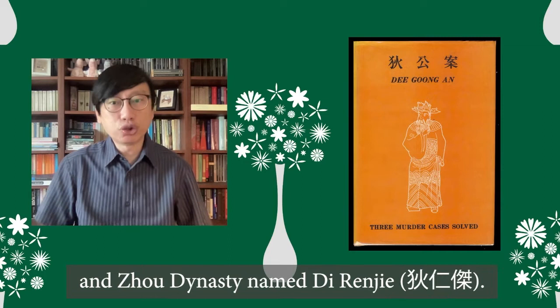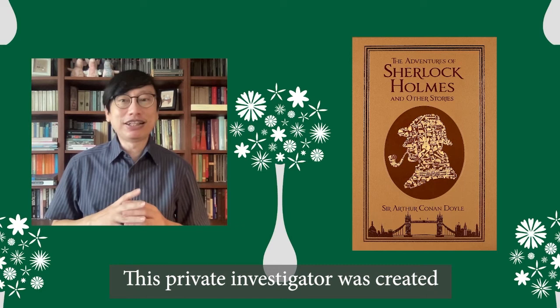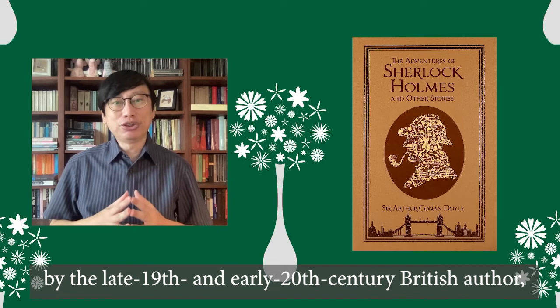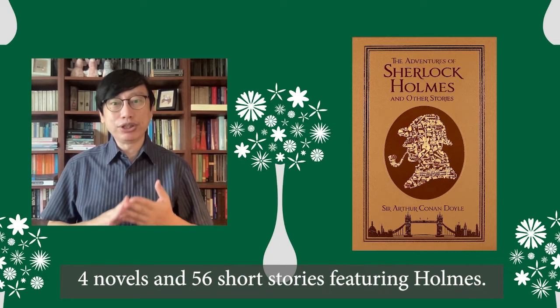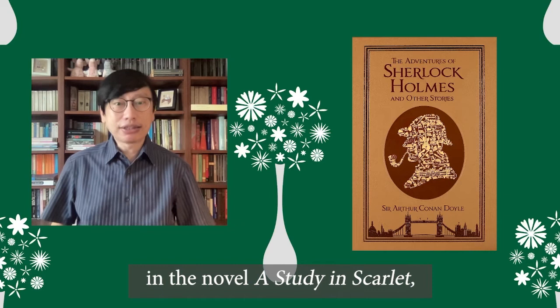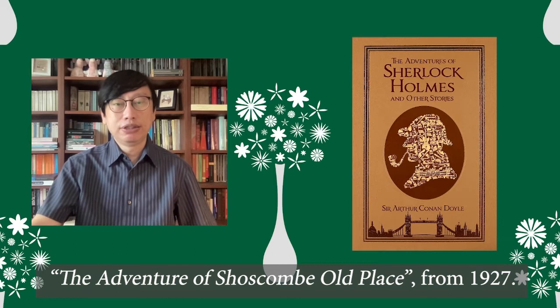Sherlock Holmes, on the other hand, is entirely fictional. This private investigator was created by the late 19th and early 20th century British author Arthur Conan Doyle. Doyle had written a total of four novels and 56 short stories featuring Holmes. The Londoner first appeared in the novel A Study in Scarlet, published in 1887, and made his last appearance in the short story The Adventure of Shoscombe Old Place from 1927.